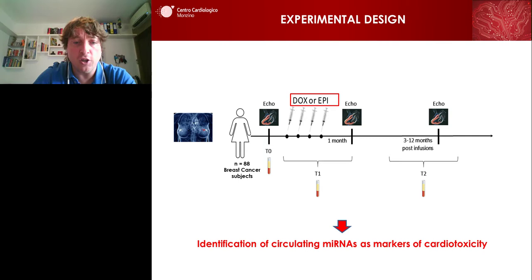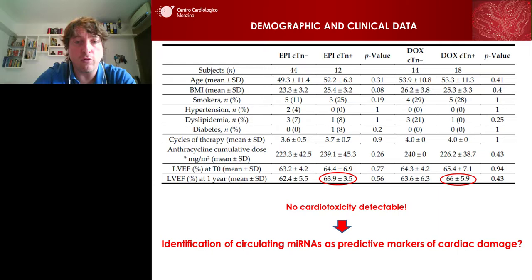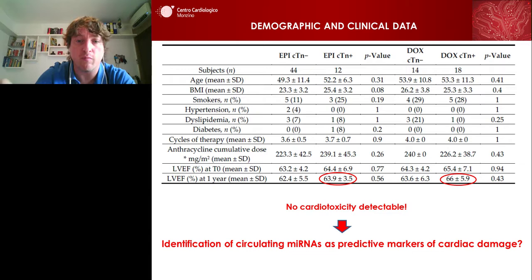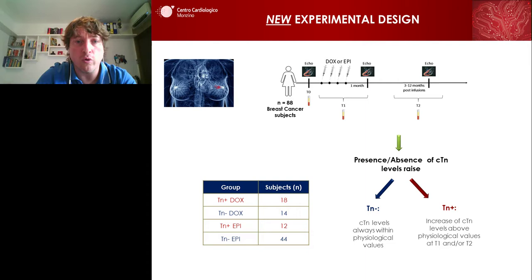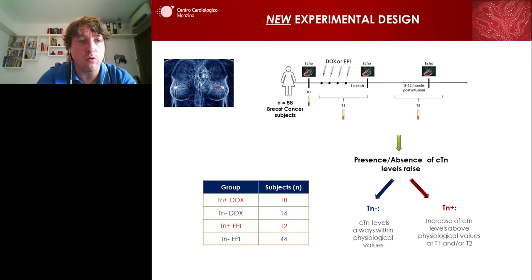The aim was the identification of circulating markers of cardiotoxicity. Unfortunately for us — not for the subjects — no cardiotoxicity was detectable. So the subjects suffered no problems of cardiac function. We had to rearrange our research and aimed for the identification of circulating microRNAs as predictive markers of cardiac damage. We decided to divide subjects into groups based on the presence or absence of an increase of troponin levels in their blood, and also divided on the basis of treatment: either doxorubicin or epirubicin.